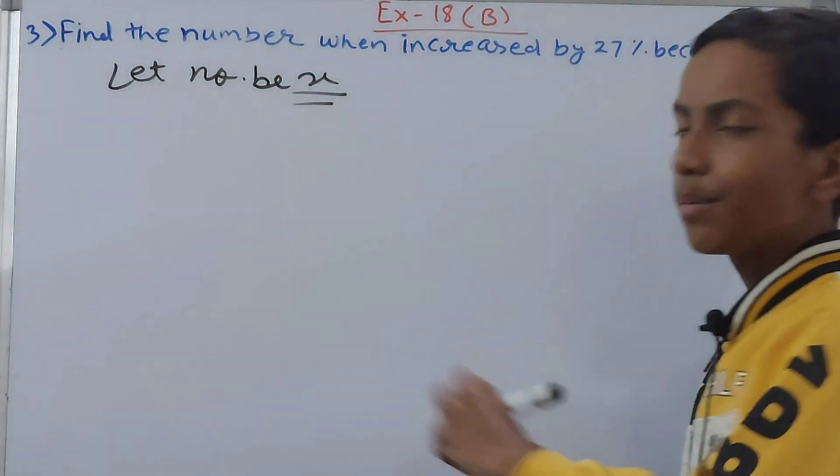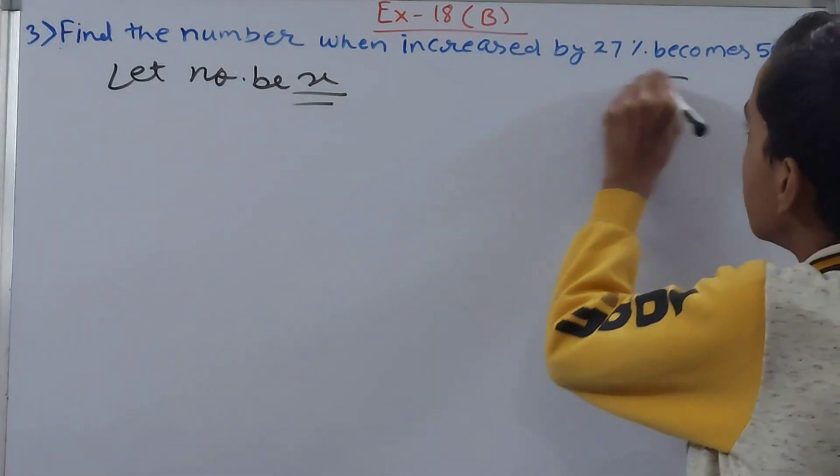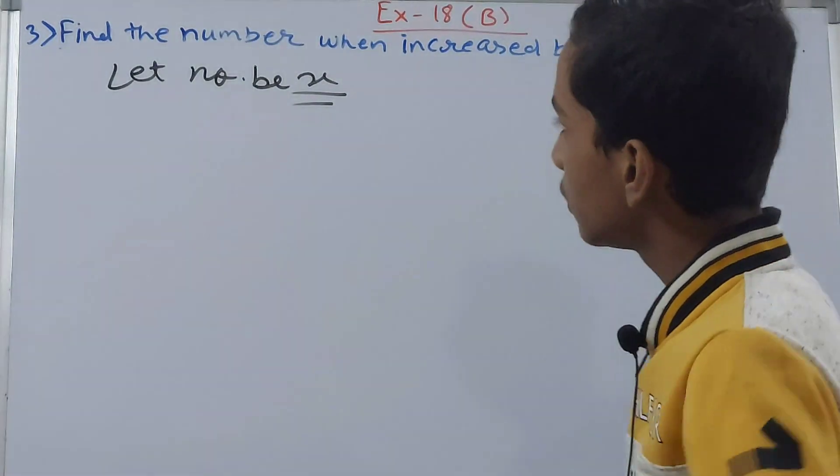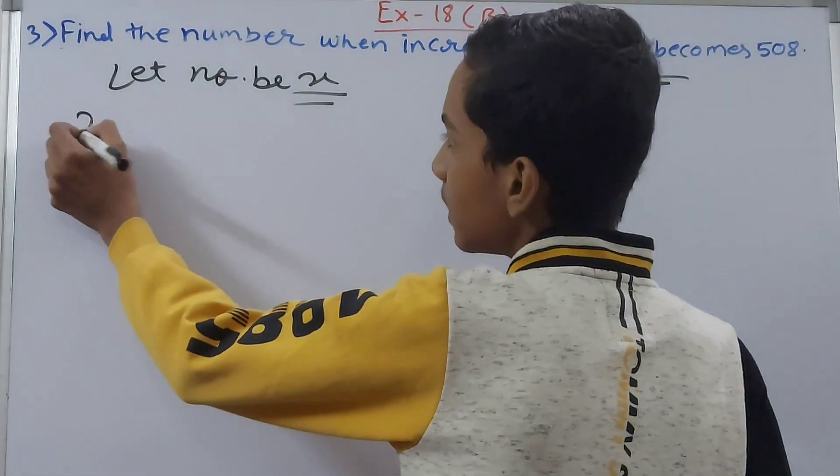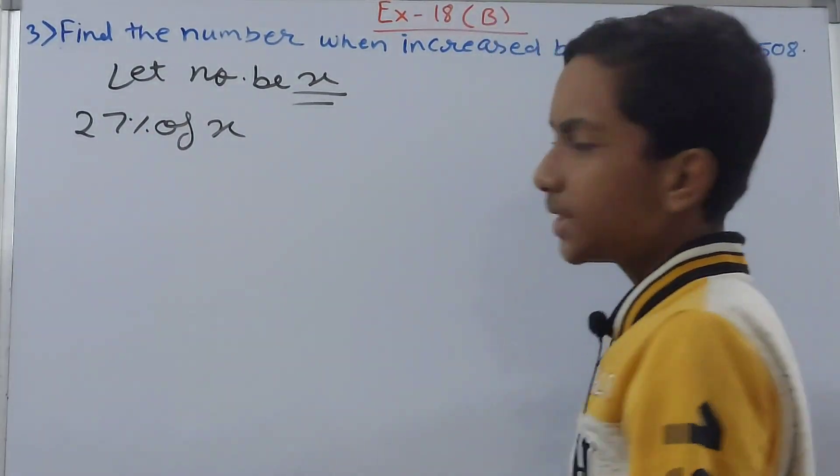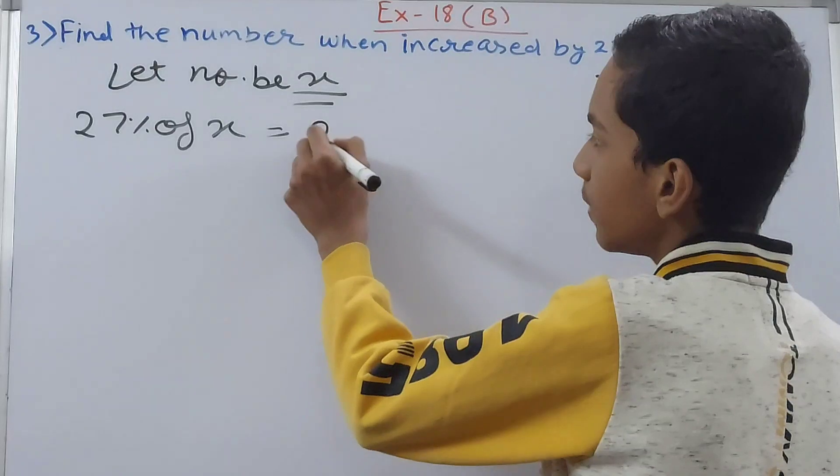Now in this, x 27% has been increased. So increased by what? 27%. Right, so we increased 27% of what? x. So what do we get here? We can say this as 27% of x. This much will be increased in x.